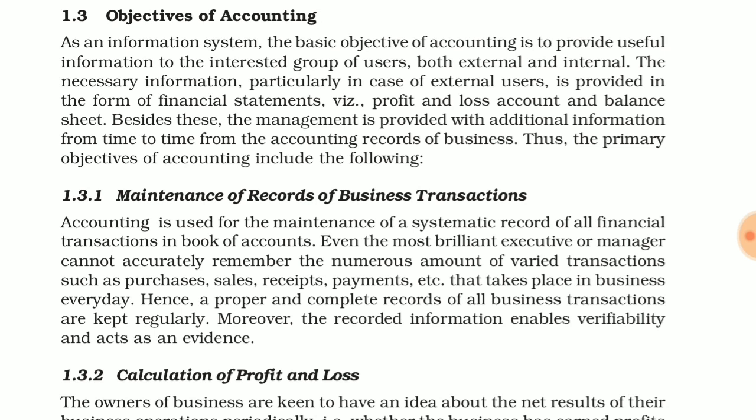The first objective is that you are maintaining records of business transactions. Accounting is used for the maintenance of a systematic record of all financial transactions in books of accounts. Even the most brilliant executive or manager cannot accurately remember the numerous amounts of varied transactions, such as purchase, sales, receipts, payments, etc., that take place in the business every day. Hence, a proper and complete record of business transactions is kept regularly. Moreover, the recorded information has verifiability and acts as evidence.